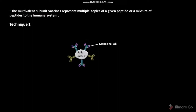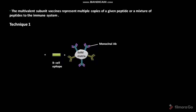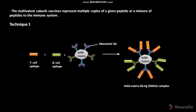In technique 1, a solid matrix which is particle in nature is attached with monoclonal antibodies. These monoclonal antibodies are then bounded with or saturated with desired immunodominant B-cell epitope and T-cell epitope. As a result, a solid matrix antibody antigen or SMAA complex is formed. The B-cell epitope and T-cell epitope are also called as antigenic determinant.